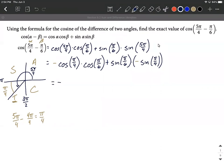I'm going to bring along that negative sign. Cos(π/4) is √2/2. Cos(π/6) is √3/2. Plus sin(π/6) is 1/2. And then sin(π/4) is negative √2/2. And this negative carried along, that's the negative out in front here.